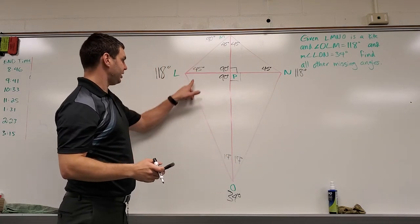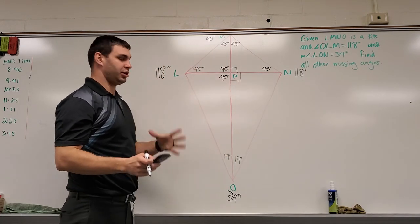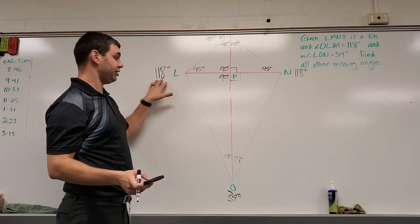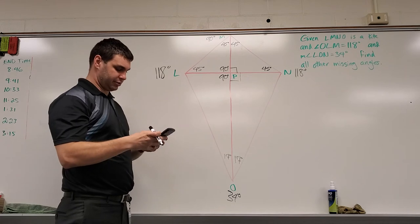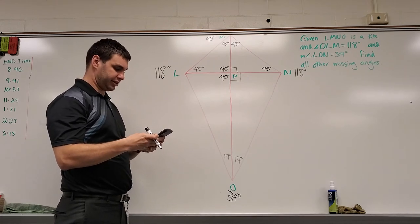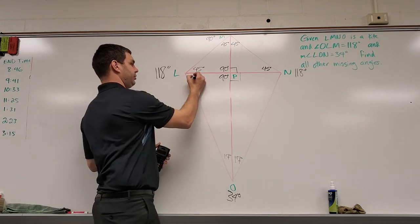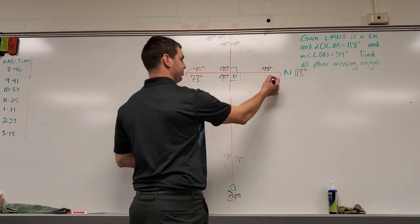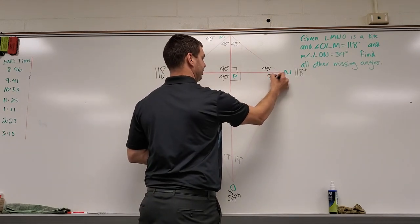All right, then the only other angles we have left are down here and down here, which are also going to be the same because these are both made up with 118 degrees. So if I take 118 and subtract 45, that gives me 73 degrees for this bottom angle there and this bottom angle here, 73 degrees.